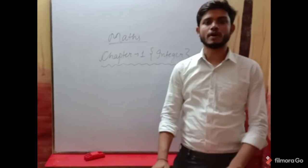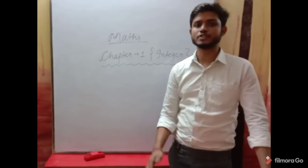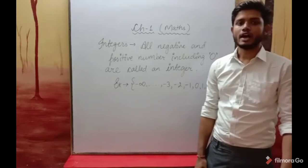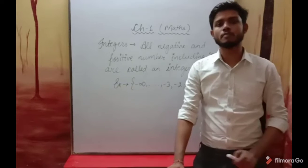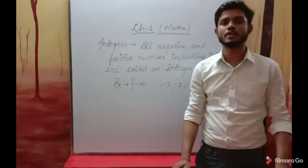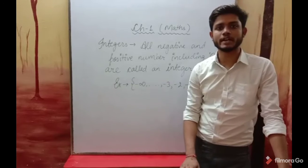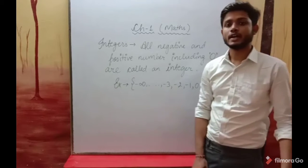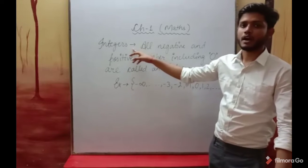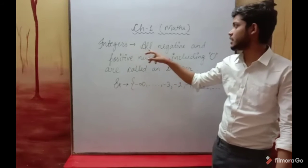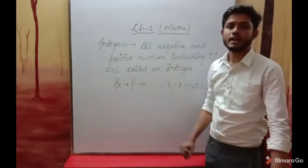I am going to start your first chapter, which is on integers. As we all read in the previous class, an integer includes all positive numbers and negative numbers, including zero. All negative and positive numbers including zero are called integers.